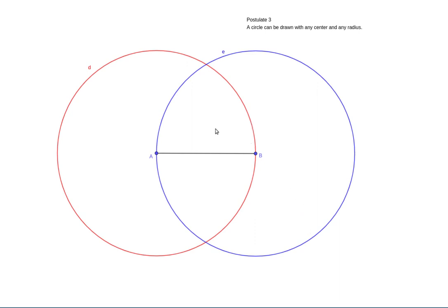Those two circles are going to intersect at a particular point. Let's say that point of intersection is C. Another one of our postulates, postulate 1, says that between any two points, there can be drawn a straight line segment.